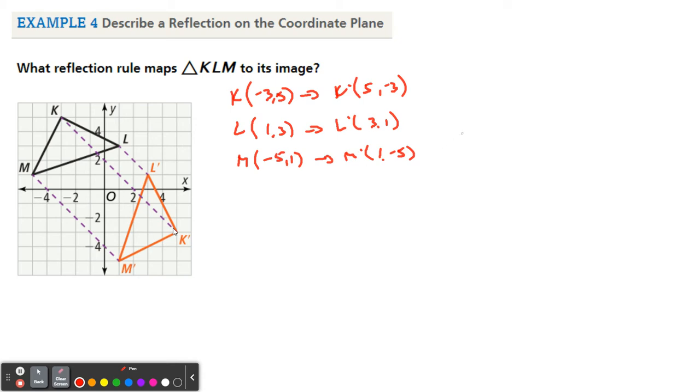So if you notice here, what is the rule going to be? Well, it looks like if I take a point x, y, and I reflect it across this line, which we're going to find eventually, it looks like the x and y just switch places each time.